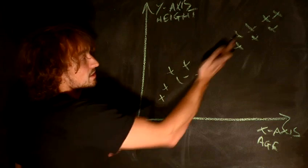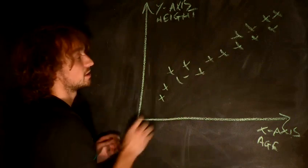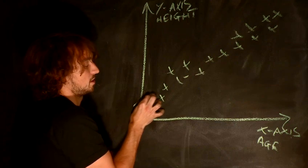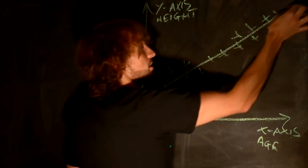So with this scatterplot of age versus height, we need to draw a line of best fit. And the line of best fit will look something like this here.